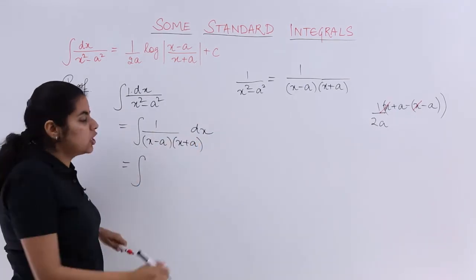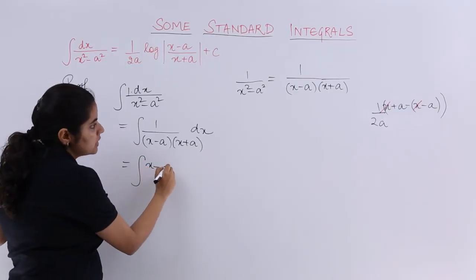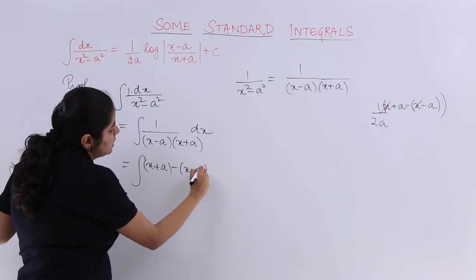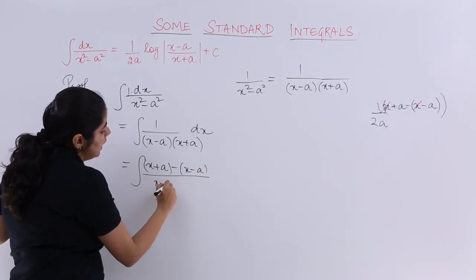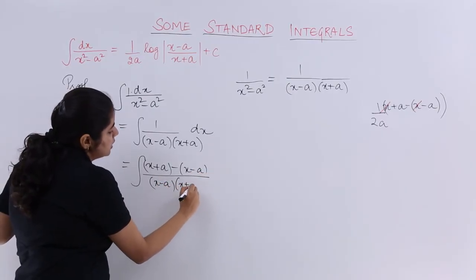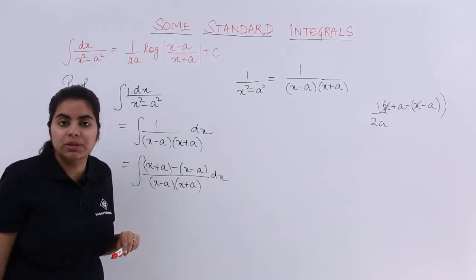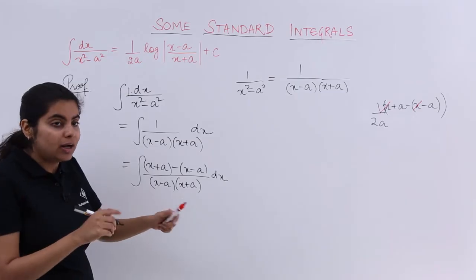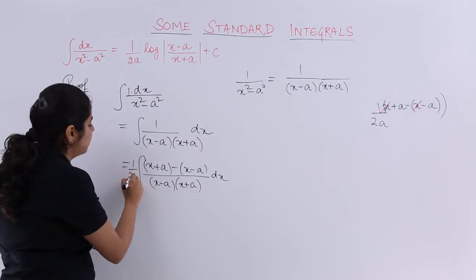Now what I do? I basically use the same methodology. I write here x plus a minus x minus a upon x minus a, x plus a and dx. I hope there is no issue with it because in short it also means 1, but not until you have written 1 upon 2a.